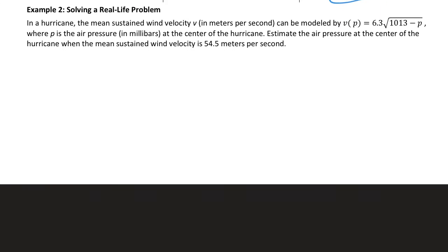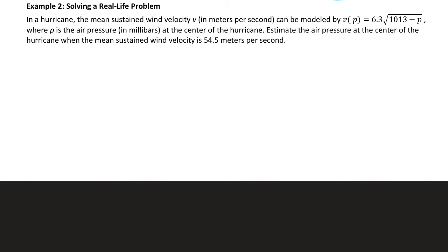So moving ahead to example two, using a real life formula. With this example, talks about in a hurricane, the mean sustained wind velocity in meters per second, represented by V, can be modeled by this function. V of P equals 6.3 times the square root of 1013 minus P, and P is the air pressure at the center of the hurricane. So it says, estimate the air pressure at the center of the hurricane when the mean sustained wind velocity is 54.5 meters per second. So I am substituting this 54.5 for V, or this V of P.